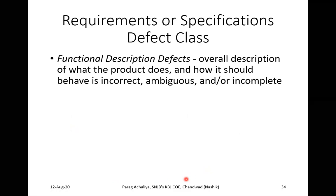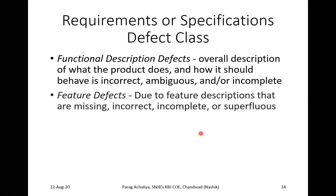The different types of defects include functional description defects. A functional description defect states that the overall description of what the product does — how it should behave — is incorrect, ambiguous, or incomplete. This defect focuses on the functional description of the system: its functional activities, what the system will do, how it will behave, and how it will create the output.